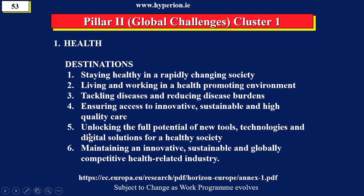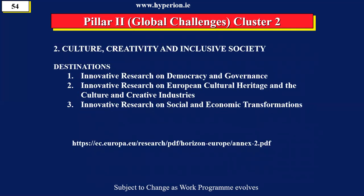Cluster 5 is for information technology — it's over a 400-page document, and on the portal you can download it. I'll show you how to analyze it. Cluster 2 of Pillar 2 is perfect for social science and humanities. We can see research on democracy, culture and heritage, the creative industries, and also social and economic transformations — dealing with migration and social welfare systems. This is ideal for social science and humanities people.